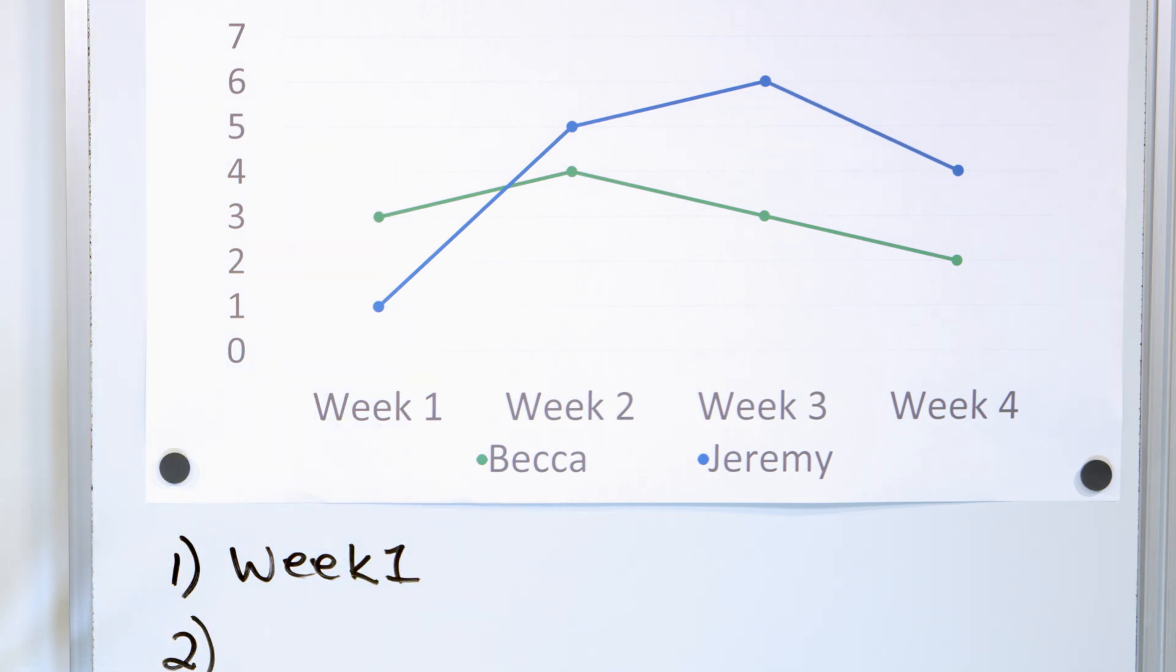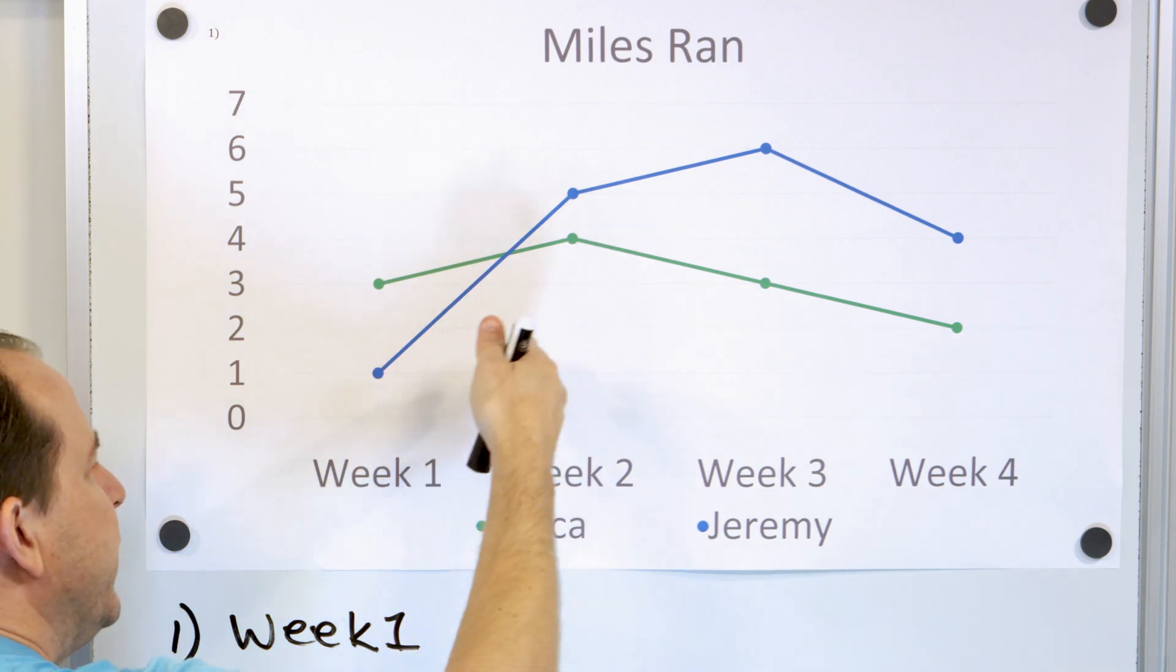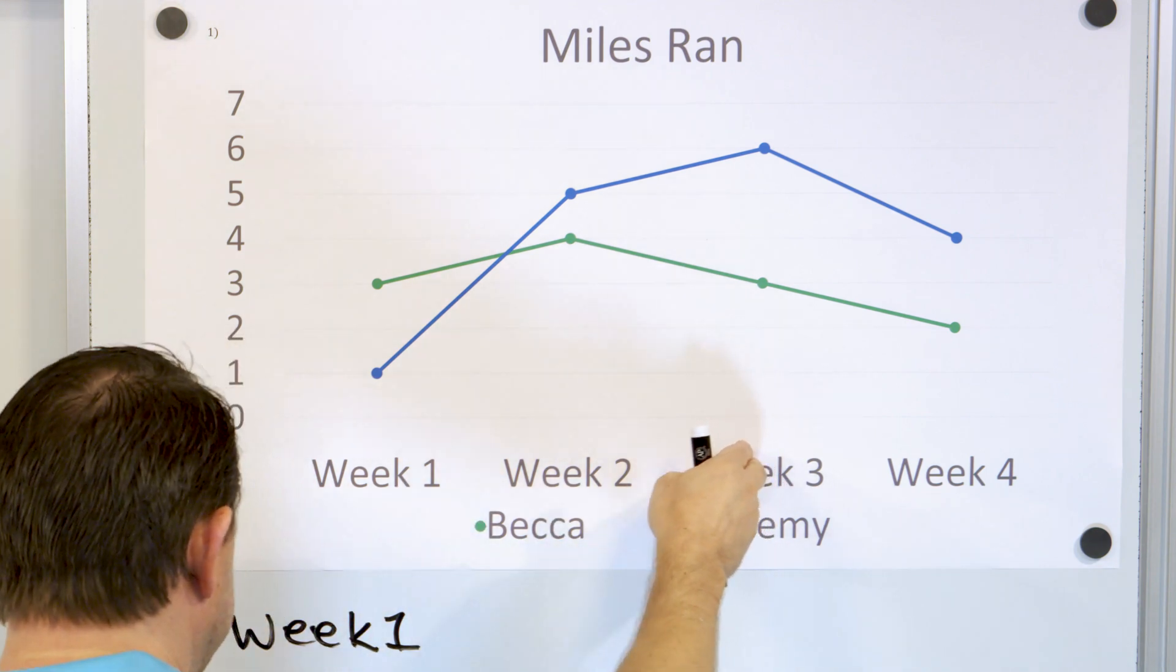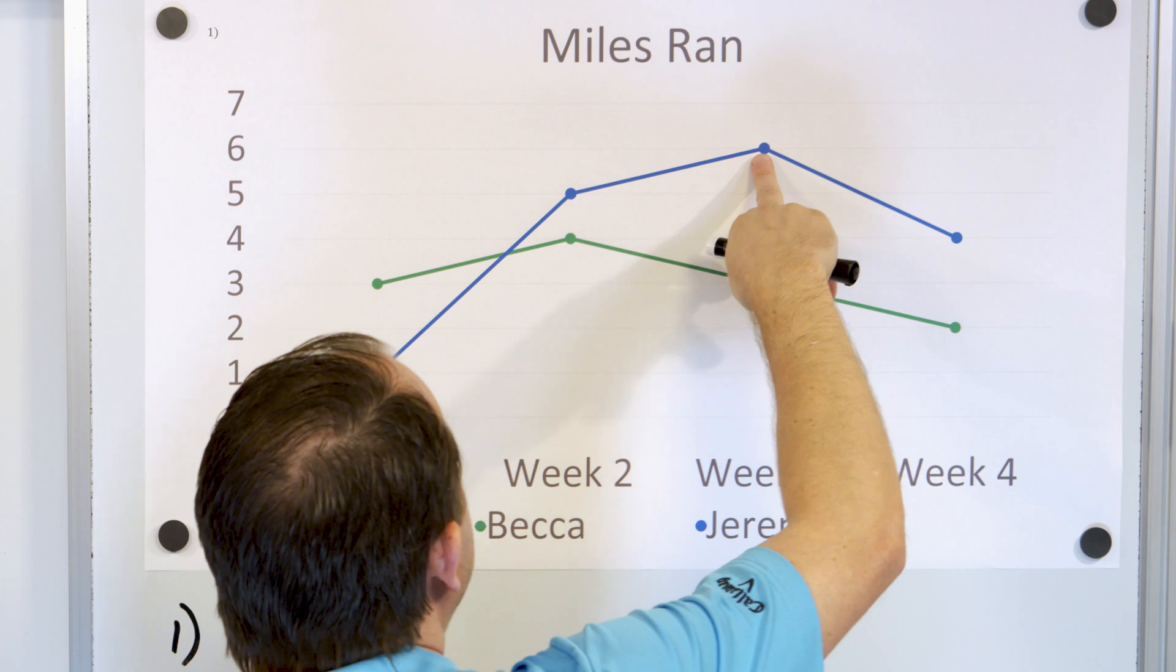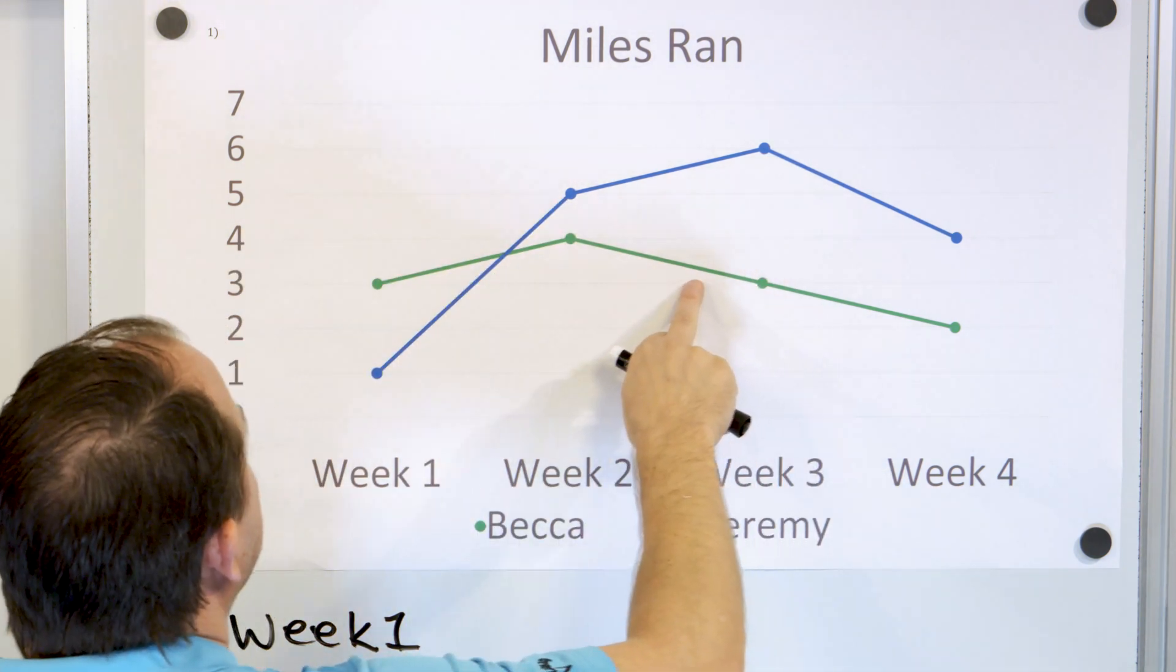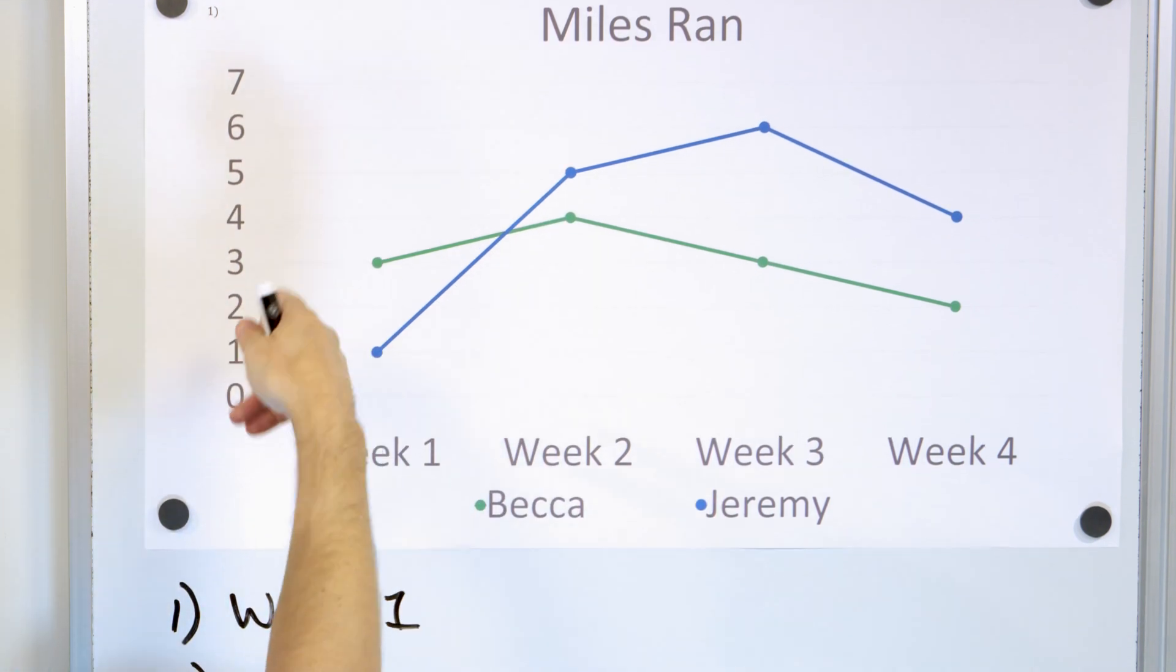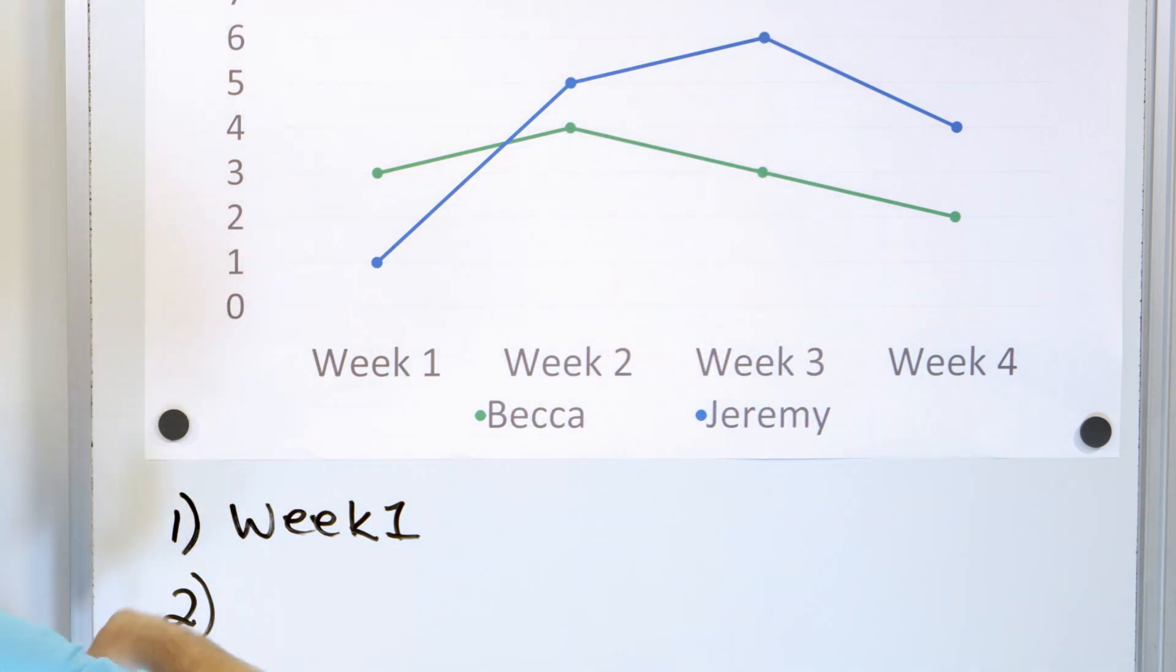Question number two, how many more miles did Jeremy run than Becca on week three? On week three. So you ignore week one, you ignore week two, you ignore week four, and you only focus your attention on week number three. How many more miles did Jeremy run than Becca? Jeremy ran six, Becca ran three. How many more miles? It's just six minus three. Six minus three is three. So on this week, Jeremy ran three more than Becca. So on week three, he ran three more miles.